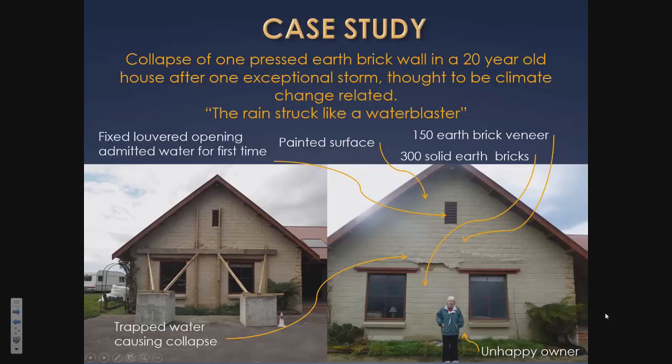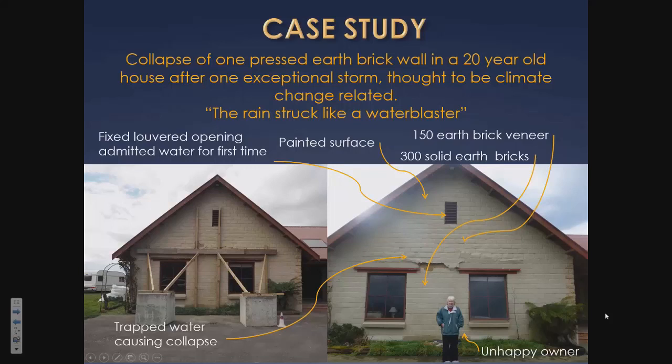I've seen plenty of examples of failed surface coatings. One building on the bottom left is looking pretty nasty. As an architect I don't want my clients to call and say the wall's not looking too flash. One case cost a great deal of money to sort out. There's a lime plaster on an old historic building that has seen better days. The point is I don't believe surface coatings are really the answer to having significant improvement in building design when it comes to severe wind-driven rain — we get failed paints and failed plasters.